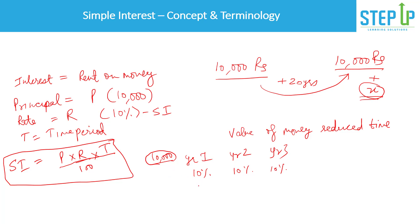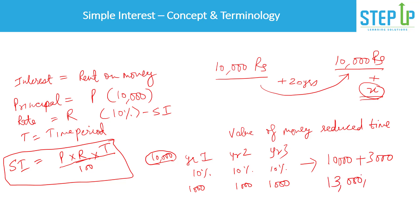This means that for the ten thousand rupees borrowed at ten percent, after year one you owe ten percent of ten thousand which is one thousand rupees. Year two also one thousand rupees, year three also one thousand rupees — because it's always charged on the principal, which is constant. So if I return after three years, you'd want ten thousand plus one thousand per year times three, which is thirteen thousand rupees.